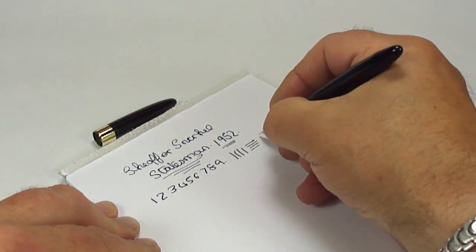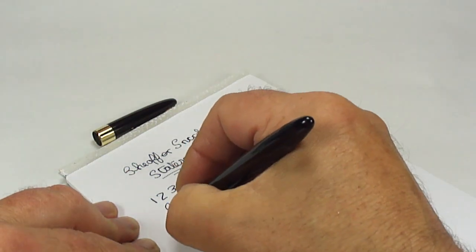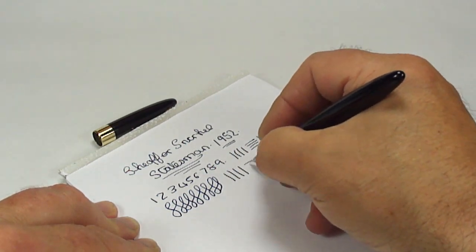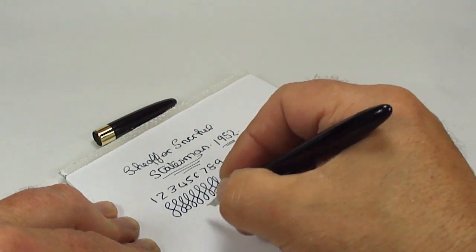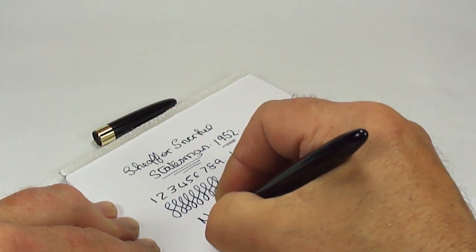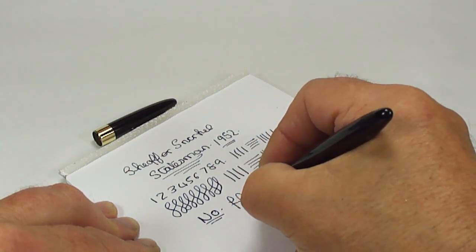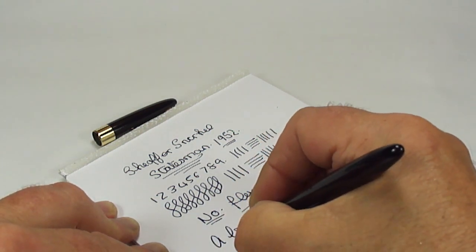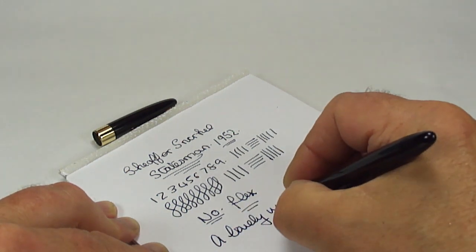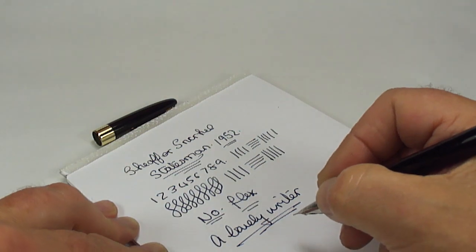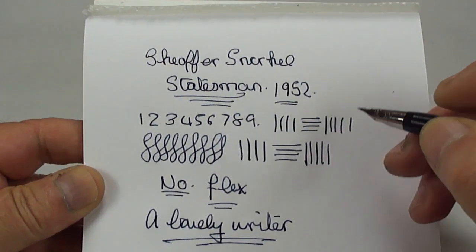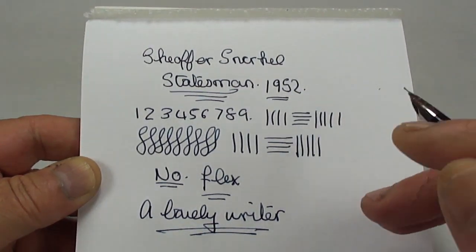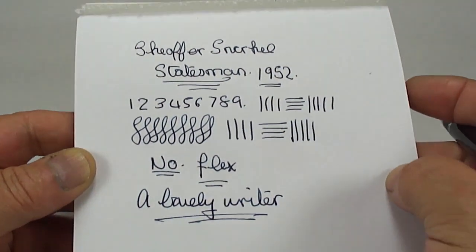Does it have any flex? Well, to be quite honest with you, I do not expect it to have any flex because these triumph nibs are quite a hard, well not hard, should I say they're actually a stiff nib. So the answer is no, no flex, but a lovely writer. So there you go, there's a writing sample. A lovely rider, nice and smooth writing as you'd expect from a nice serviced snorkel fountain pen.